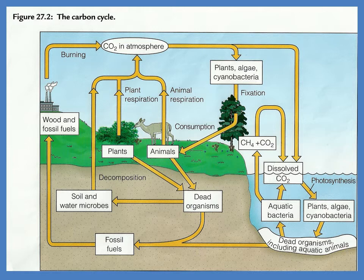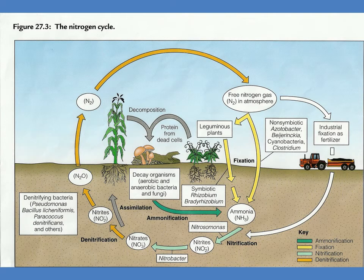So that gives you an idea of how everything gets recycled — and it's not just carbon, it's also things such as nitrogen. Microorganisms are very critical players in the nitrogen cycle because sometimes nitrogen is in the soil in a form that plants cannot use. It's the bacteria and the fungi that convert it into a form that can be used.